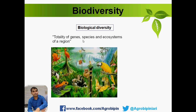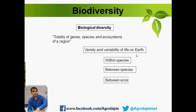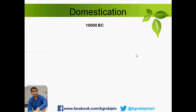In definition form, we can say that biodiversity is the totality of genes, species, and ecosystems of a region. In another way, we can say that biodiversity is the variety and variability of life on Earth, and it could be within species, between species, or between different ecosystems.